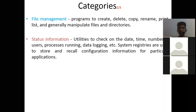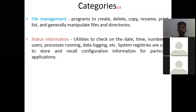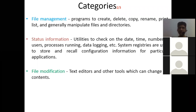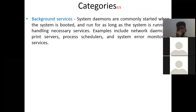Status information utilities check the date, time, number of users, processes running, data logging, etc. System registries store and recall configuration information for particular applications. File modification includes text editors and other tools that can change file content. These are further categories of system applications.